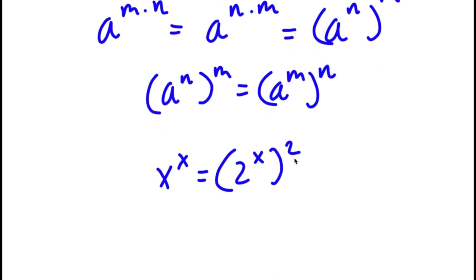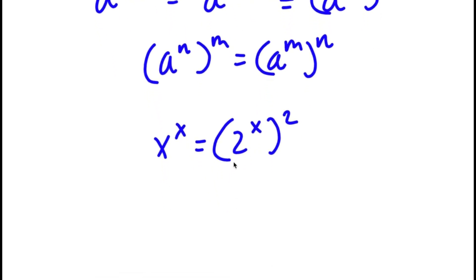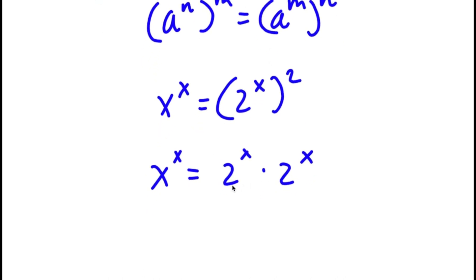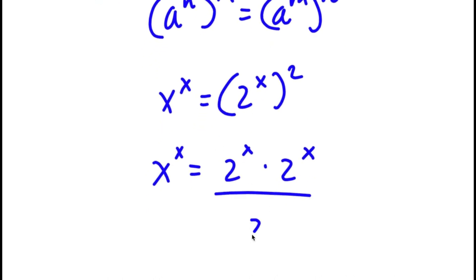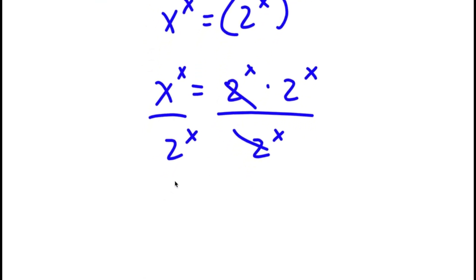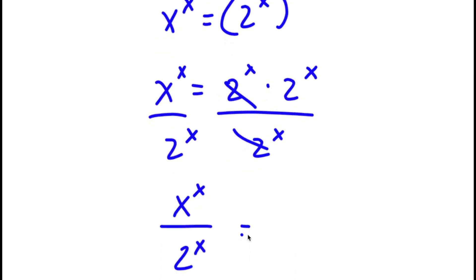Now, 2 to the power of x squared — I'm going to rewrite this as 2 to the power of x times 2 to the power of x. On both sides I'm going to divide by 2 to the power of x. These two cancel out, and now I'm left with x to the power of x over 2 to the power of x is equal to 2 to the power of x.